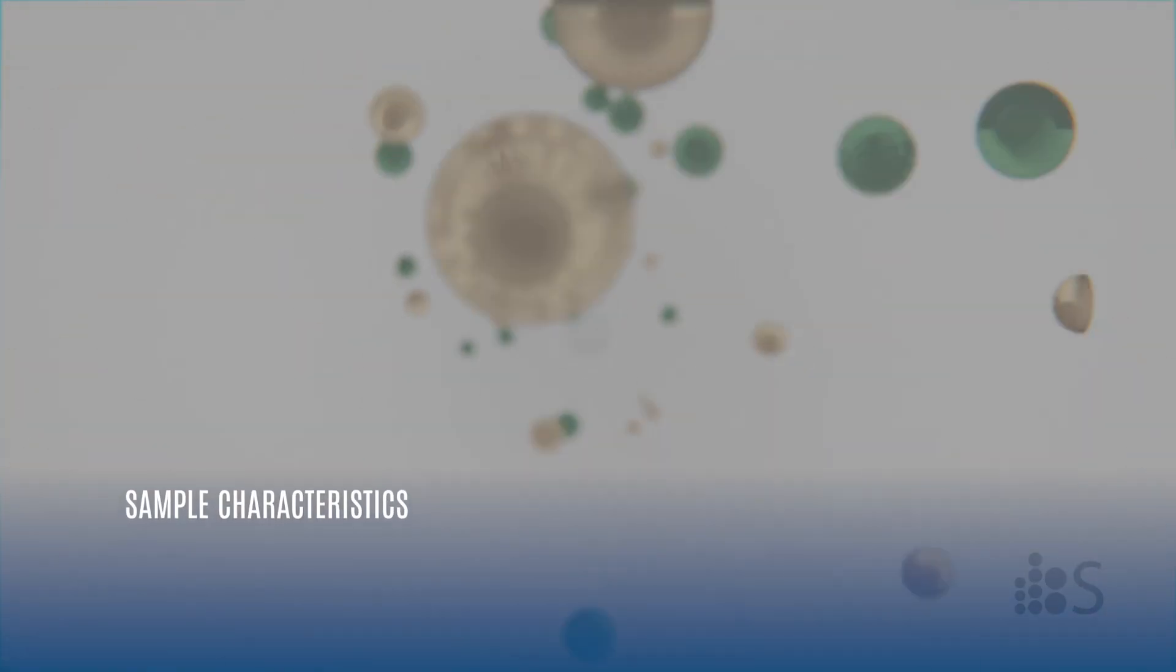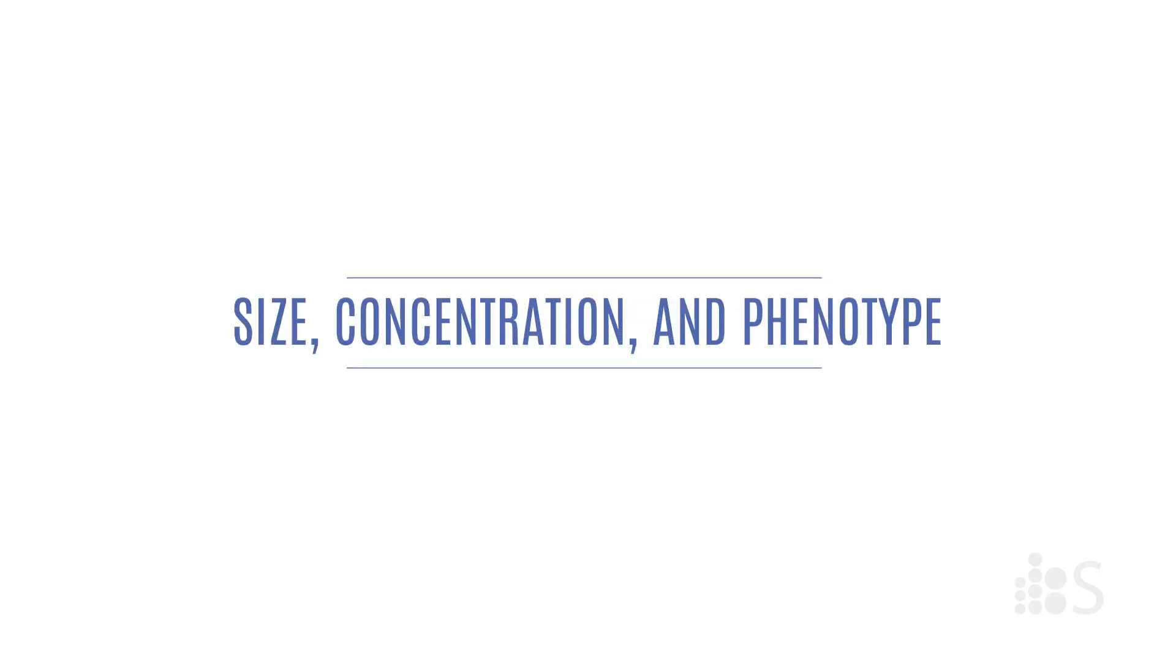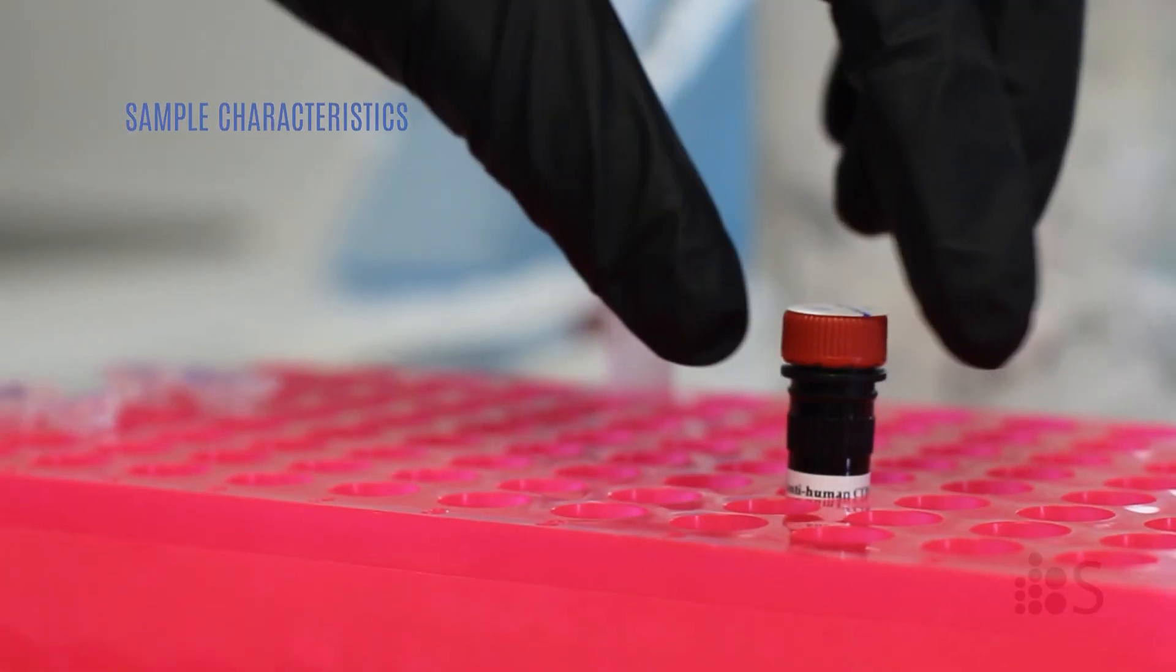This sample contains extracellular vesicles that were produced using a bioreactor method and isolated by ultracentrifugation and size exclusion chromatography. We'll use the arc to measure the size, concentration, and phenotype of these vesicles by staining them with a PE-labeled anti-CD81 antibody.